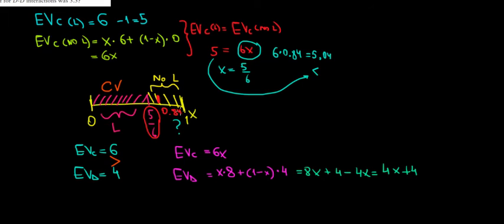Let's have a look on this range over here. 6x and 4x plus 4. Even at the indifference point of 5/6, what's going to be the expected value for the cats and for the dogs? For the cats, we would have 6 times 5/6 which is equal to 5 units.